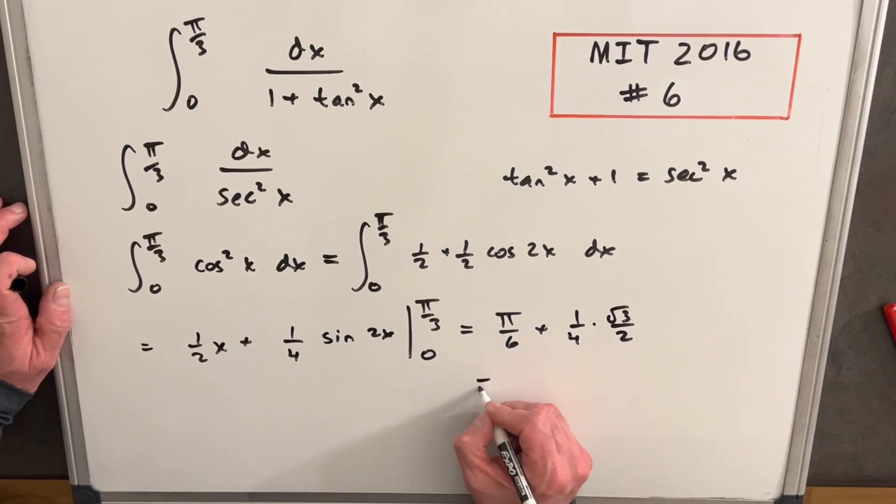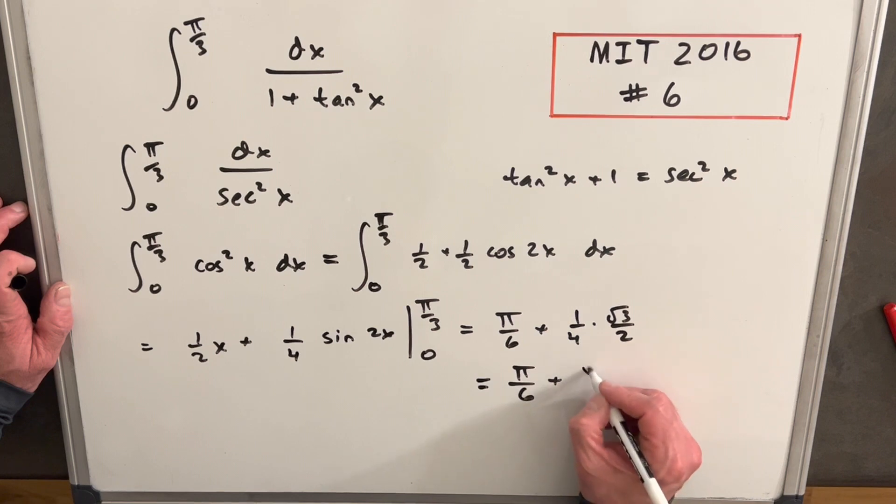Then let's just simplify for our final answer. We're going to have pi over six plus square root of three over eight. And we're done.